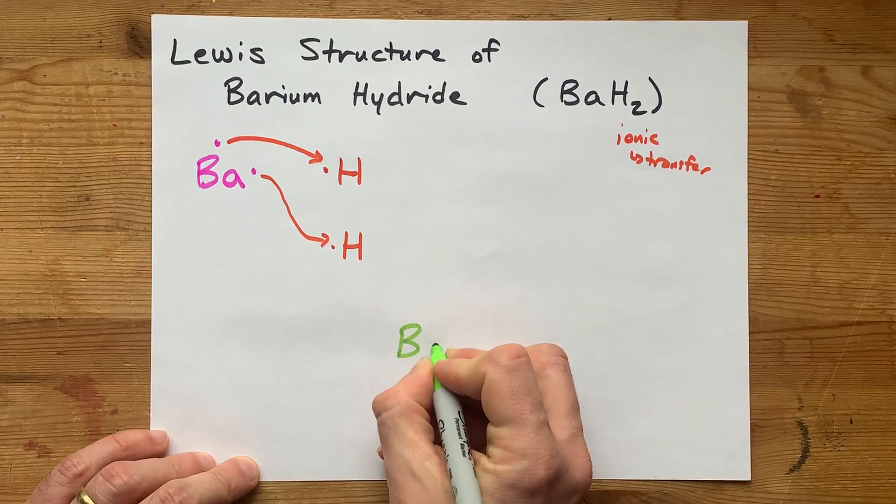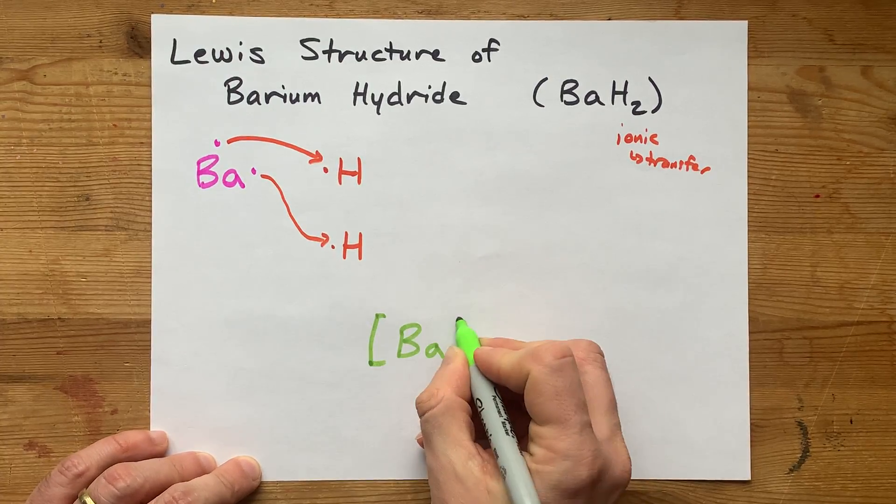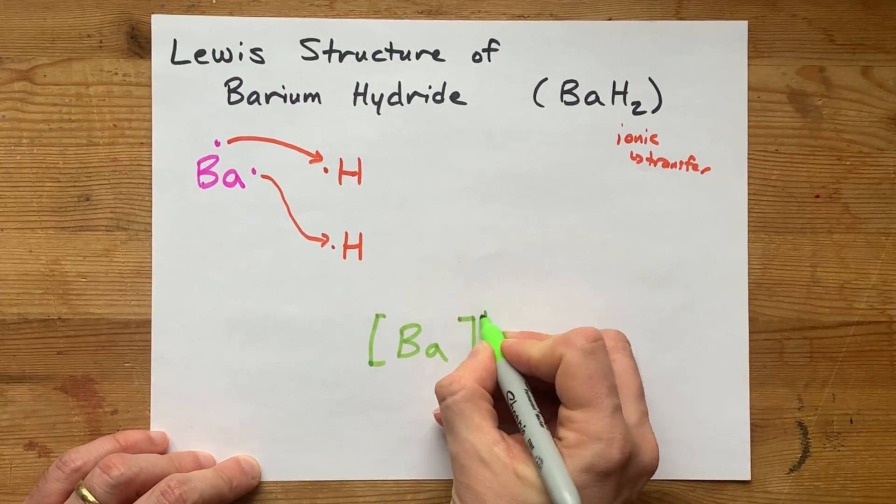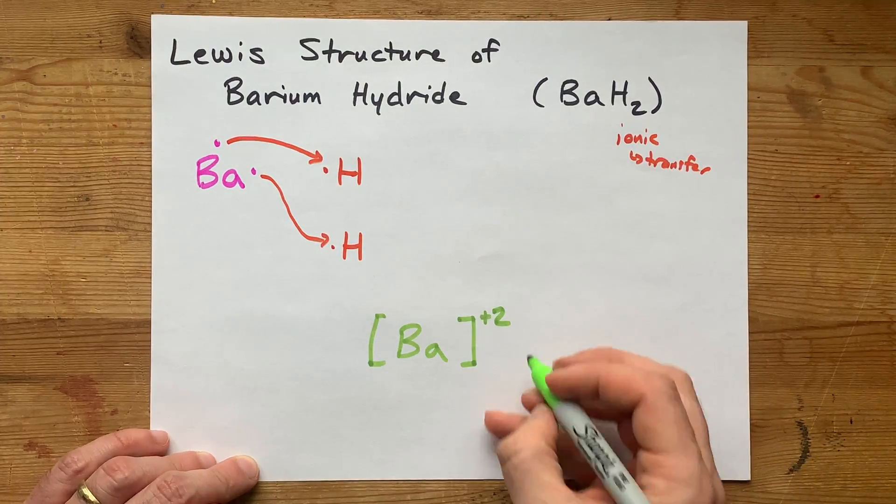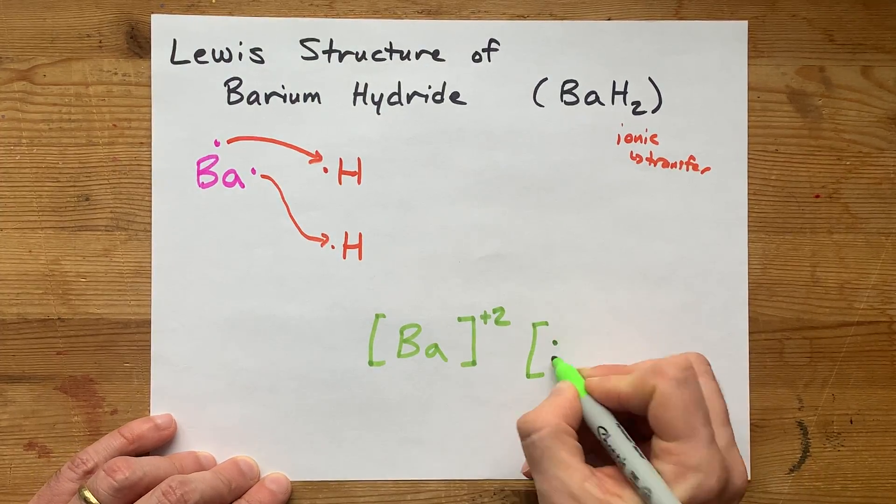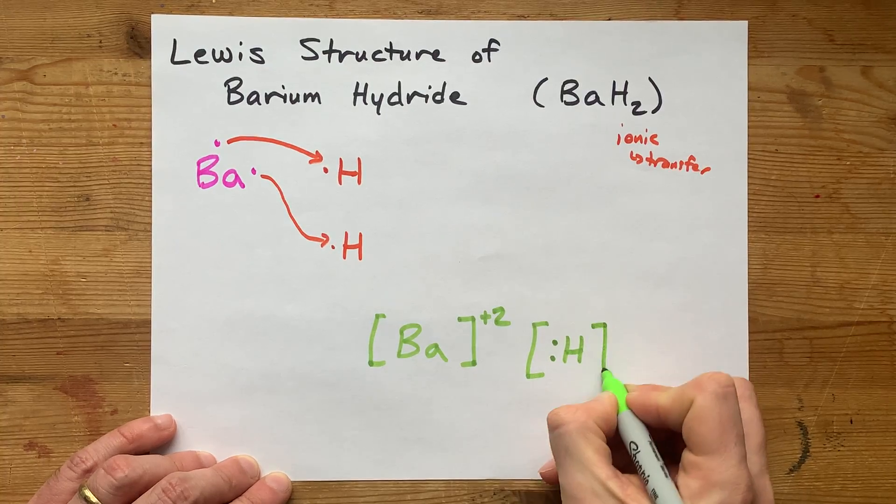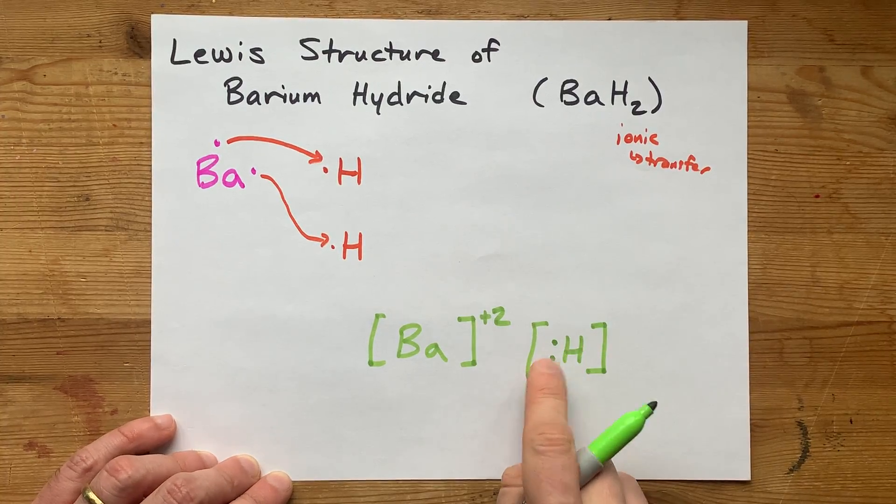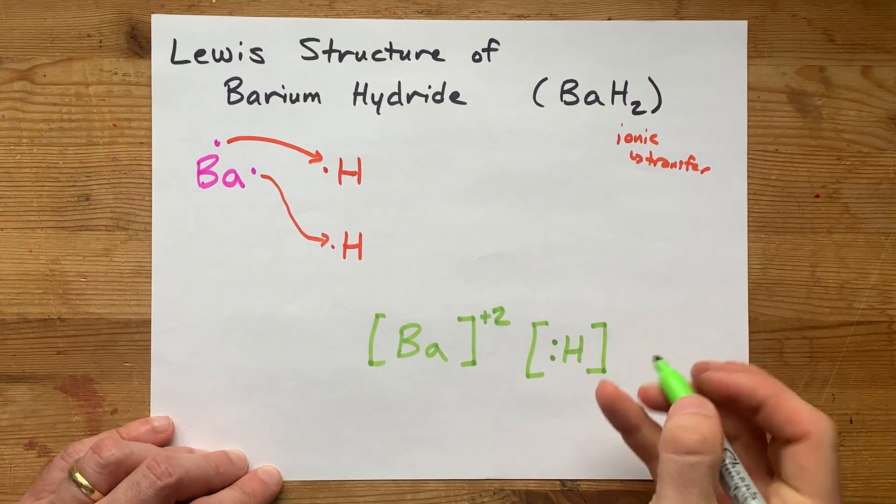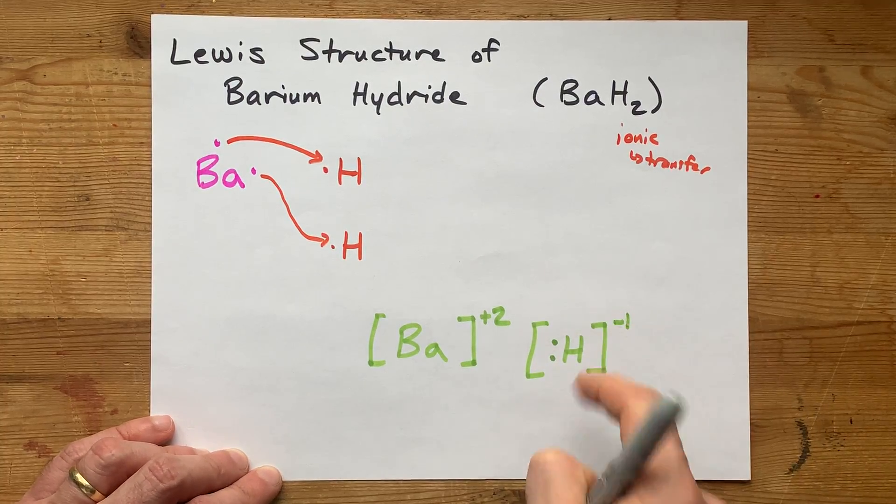What you end up with here is a barium ion. It has no valence electrons around it, but a plus two charge. And then you have two of these hydride anions. That's an H with a pair of electrons. One more electron than it brought with it.